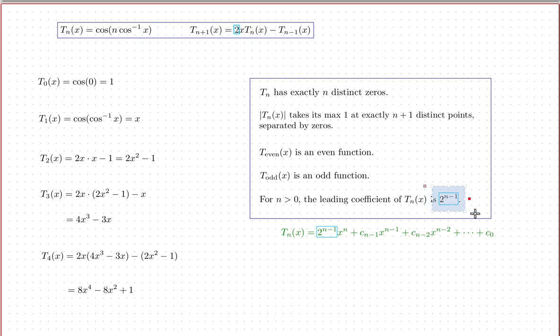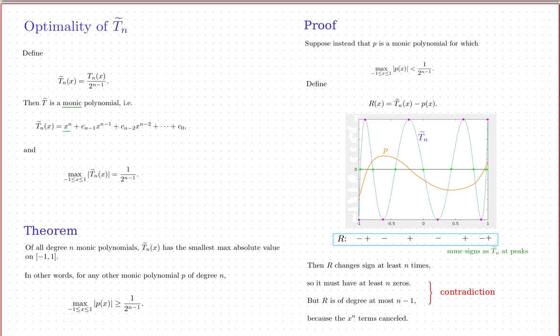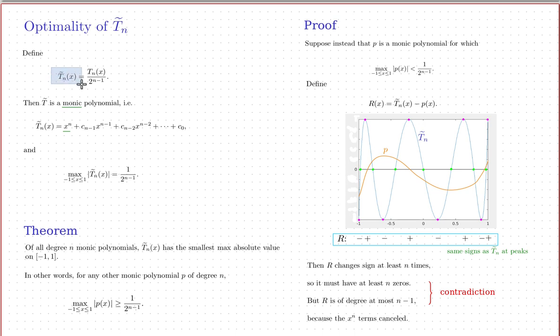Now I'll define a slight modification of the Chebyshev polynomial and show that this version has an important optimality property relevant to polynomial interpolation. We define T̃n to be Tn divided by 2^(n−1). We're dividing out the leading coefficient, so the leading term of T̃n is simply x^n — the leading coefficient is always one. A polynomial whose leading coefficient is one is called a monic polynomial.